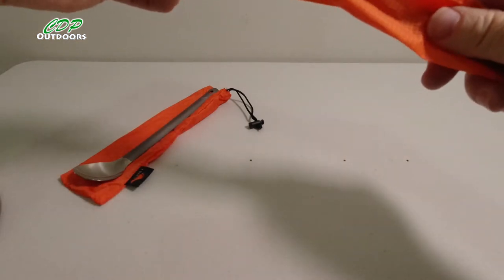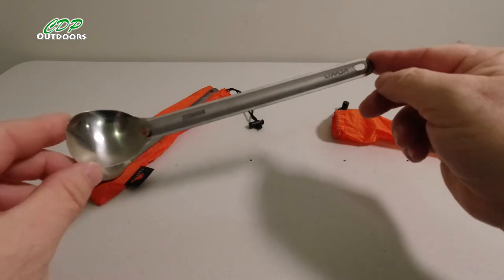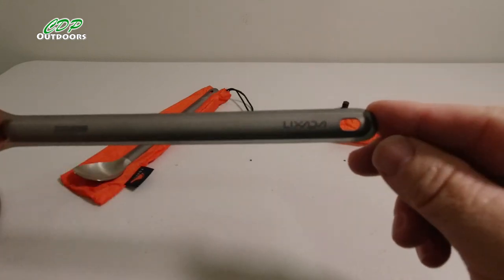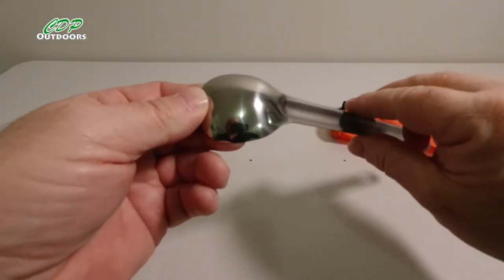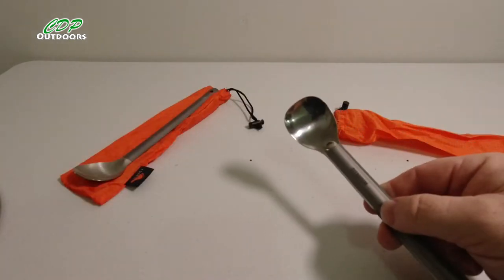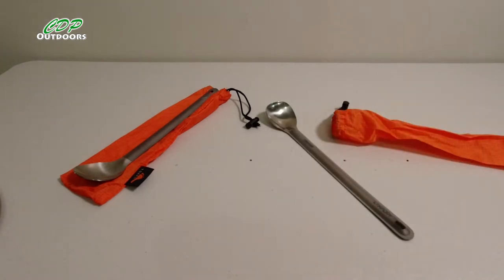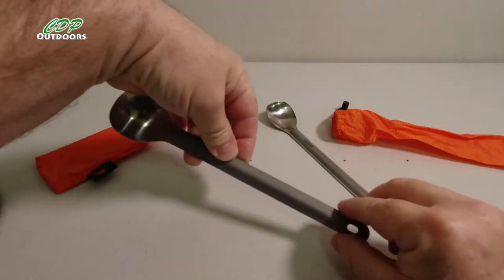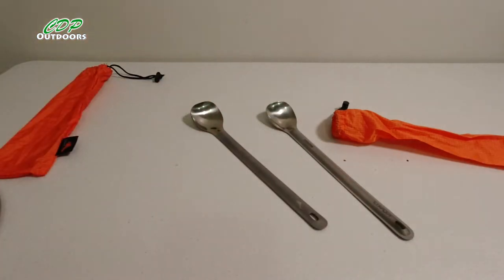The outside looks almost identical. This is the one from Lixada. If you've seen the video about this, I got comments and personal messages saying it's exactly the same spoon as the Tokes titanium one, made in the same factory just with a different name stamped on it.